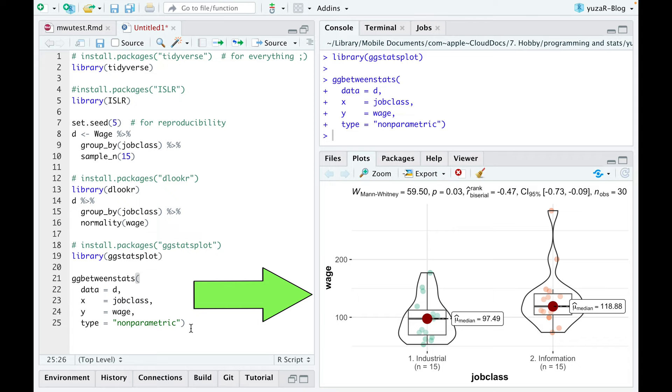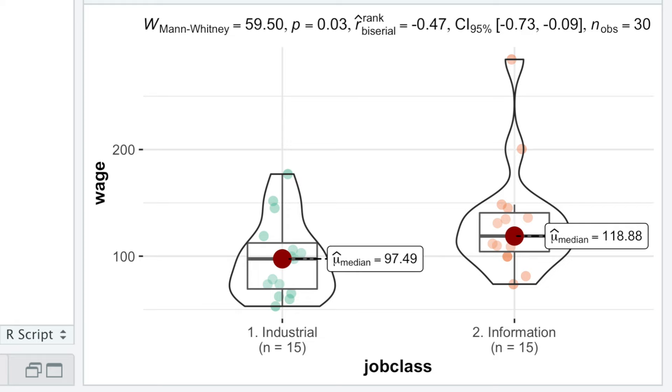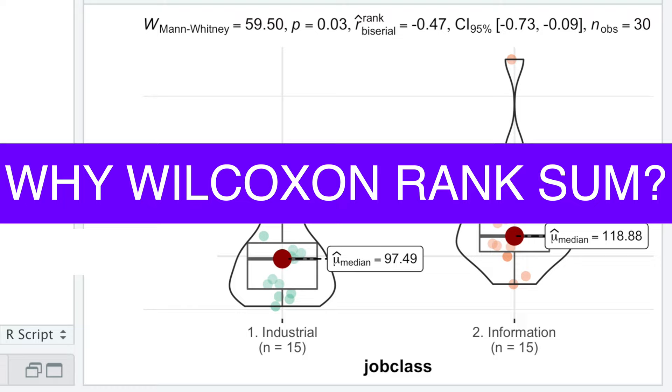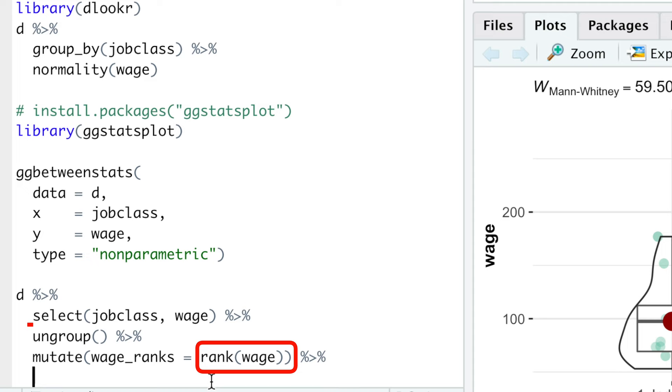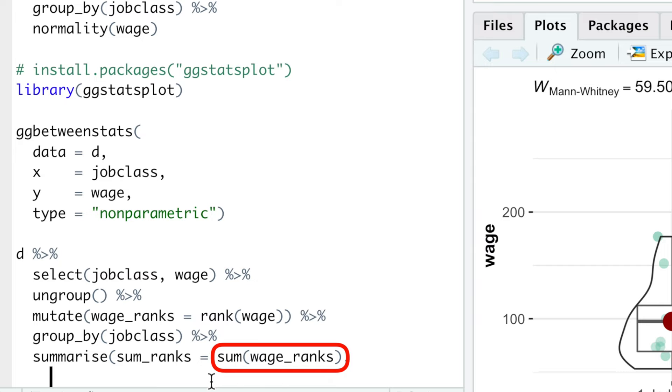Now, let's interpret the results. W-Statistics explains why our test is sometimes called Wilcoxon Rank Sum Test. Namely, the test first ranks our data independently of the group, then sums the ranks for each group, which is the reason the test is called Rank Sum.